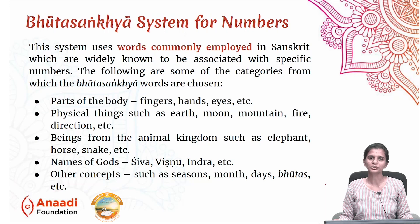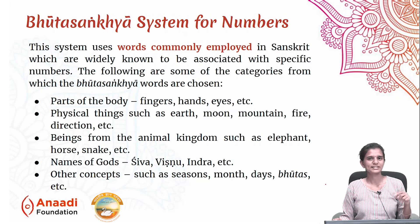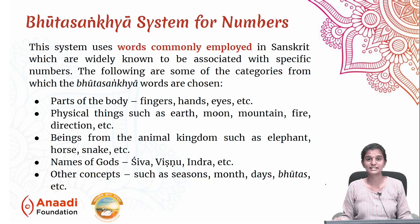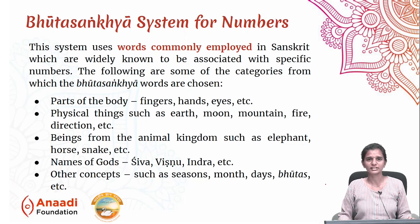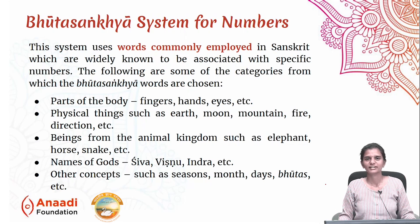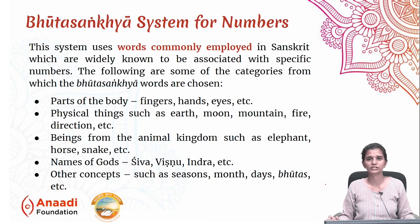Let us try to understand this Bhouta Sankhya System in a simple way. When I say a word, try to think of a number associated with it. I say fingers — ten, right? I say eyes — two. I say seasons — six seasons. Like this, commonly used and culturally well-known words are used in this Bhouta Sankhya number system.